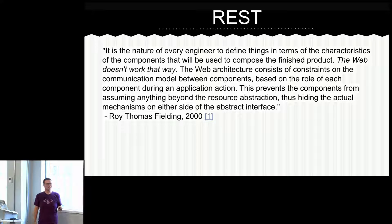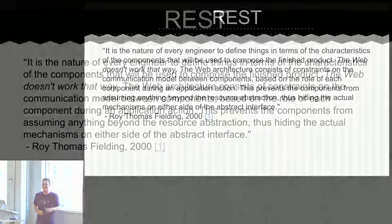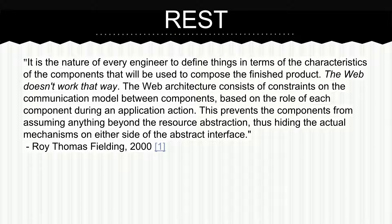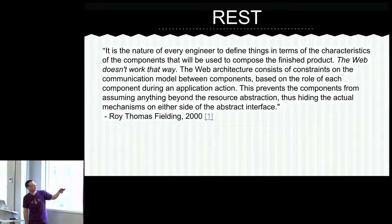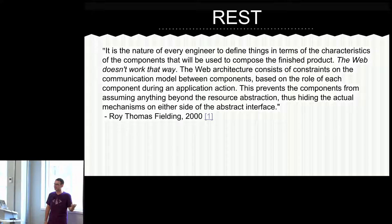One more huge block of text. Roy Fielding says: it is the nature of every engineer to define things in terms of the characteristics of the components that will be used to compose the finished product — but the web doesn't work that way. Don't think like that; just use the constraints of the communication model between components. I really just like his line: 'the web doesn't work that way.' Because what I'm about to talk about with the URL programming language is some characteristics of components we will compose the finished product out of. So Roy is basically telling me: don't do this, this is really dumb.